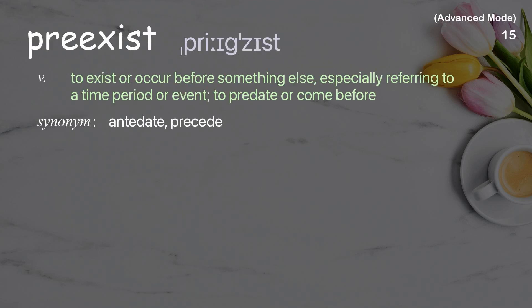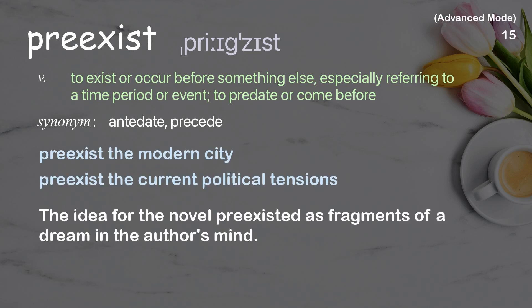Pre-exist: To exist or occur before something else, especially referring to a time period or event; to predate or come before. Examples: Pre-exist the modern city. Pre-exist the current political tensions. The idea for the novel pre-existed as fragments of a dream in the author's mind.